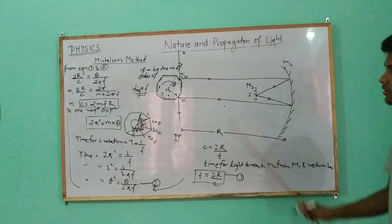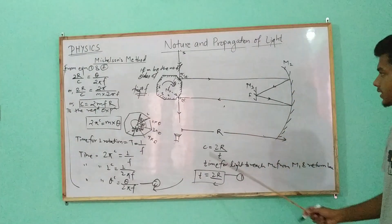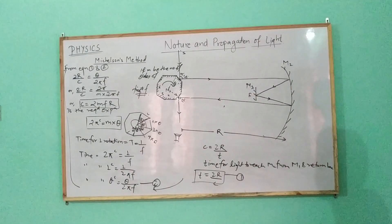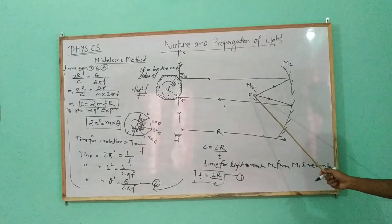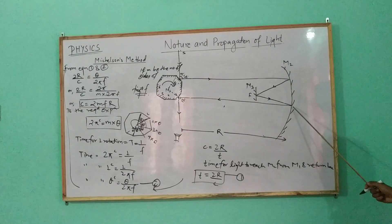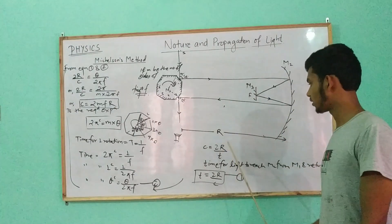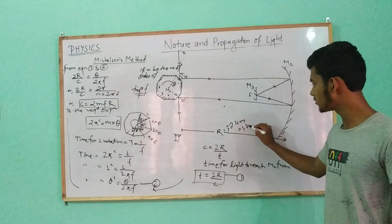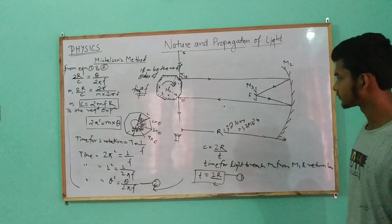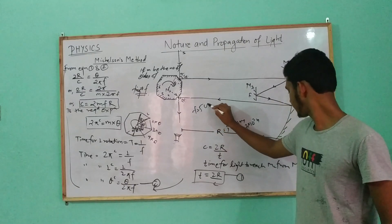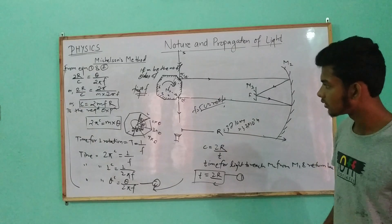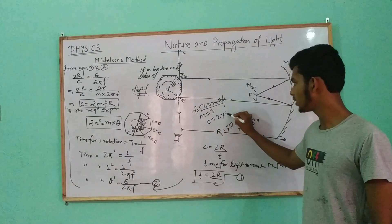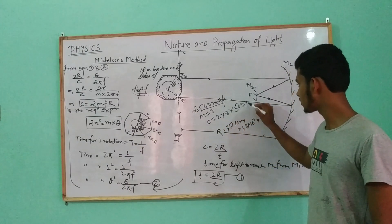So c equals 2mfR is the required expression for the velocity of light. This is the method for measuring the velocity of light using the concave mirror. The experimental arc value is R equals 37 km, which is 37 times 10 to the power 3 meters. Frequency value is 500 revolutions per second. The mirror is an octagonal mirror.